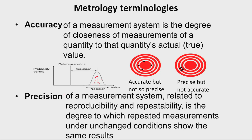Let us understand the precision of a measurement system. It is related to the reproducibility and repeatability of the process — the degree to which repeated measurements under unchanged conditions show the same results. One process is very precise while the other measurement system is not so precise.